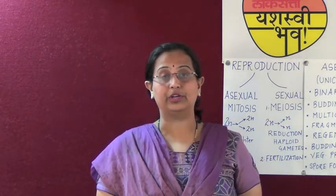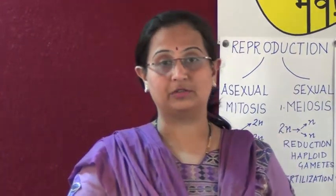The stigma, being sticky, holds the pollen grains on its surface. These pollen grains germinate to form the pollen tube, which contains two male gametes. One male gamete fuses with the egg to form the diploid zygote, while the second fuses with the nucleus to form the endosperm. This process takes place in the ovary and is called double fertilization. The endosperm provides nourishment to the developing embryo.